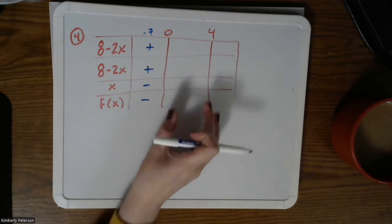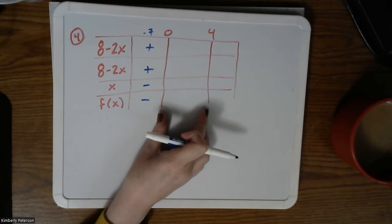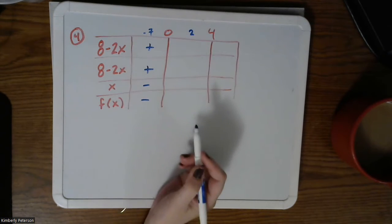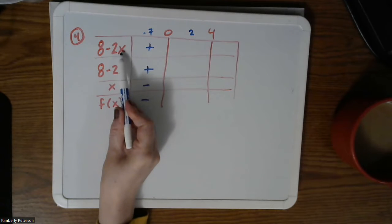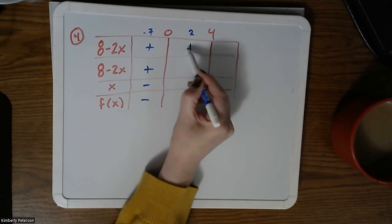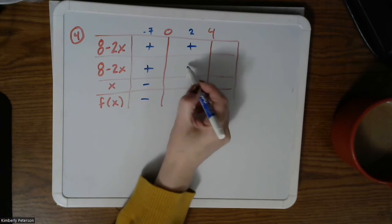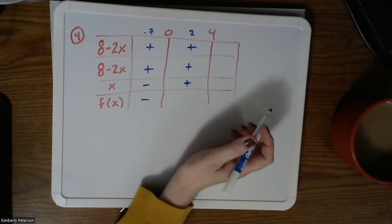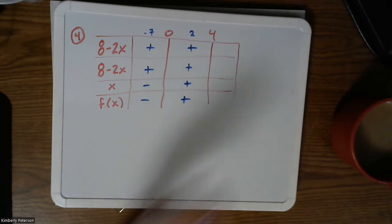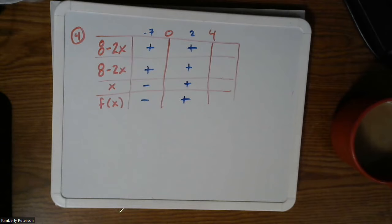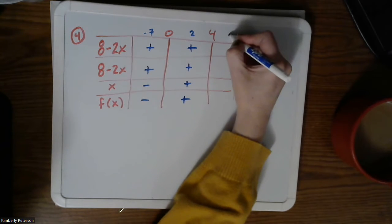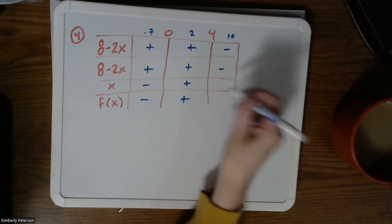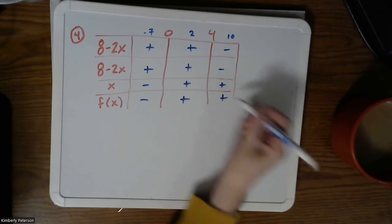Then pick a number between zero and four — say, two. Plugging in two gives positive, positive, positive, so all three multiply to give a positive. Then for something greater than four, say 10, we get negative, negative, positive — which remains positive.